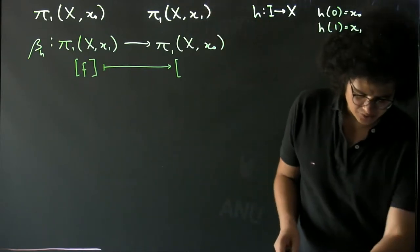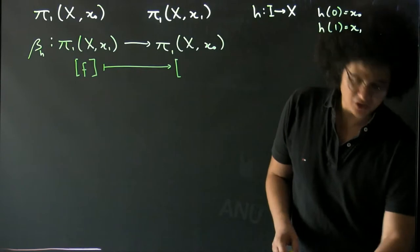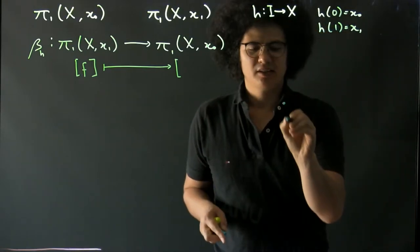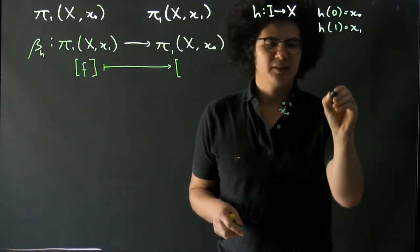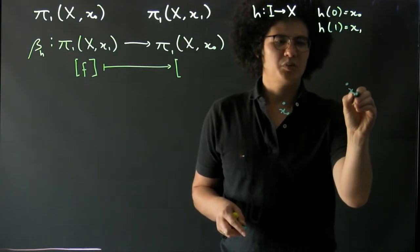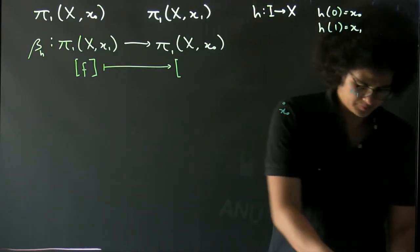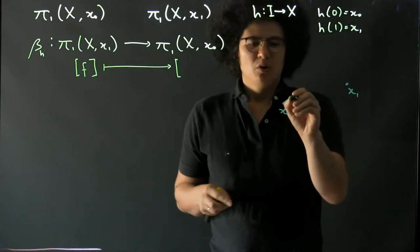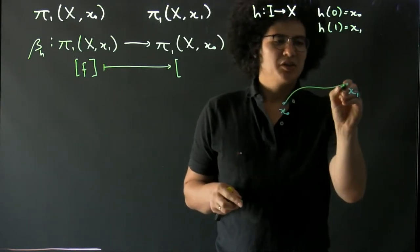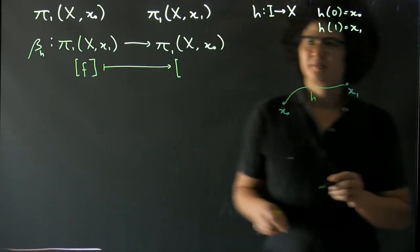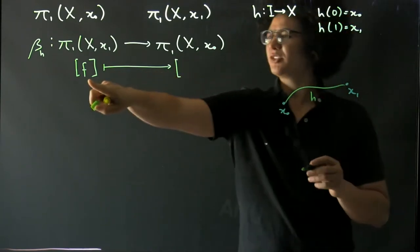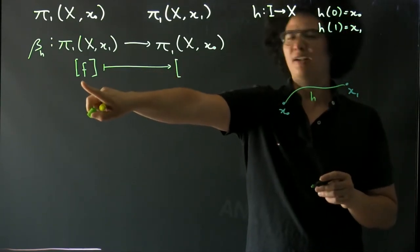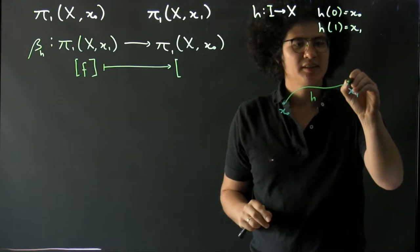Now I should say what we're actually doing here. So we've got x₀, we've got x₁, we've got this path from x₀ to x₁ which we've called h. Now we've got some homotopy class of loops, and I'll pick f here at x₁.